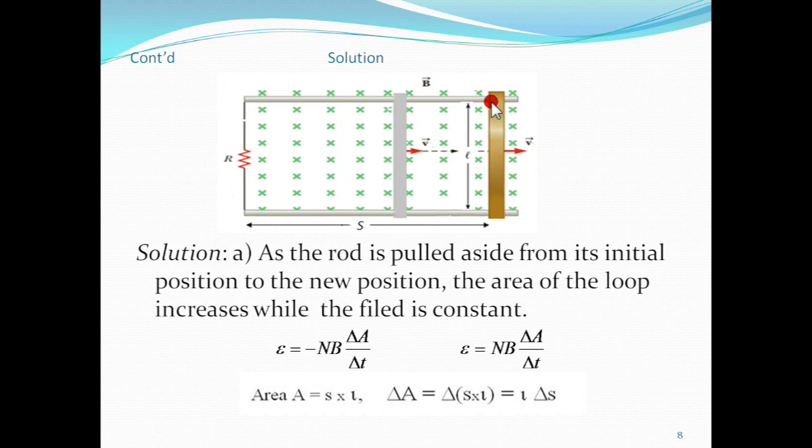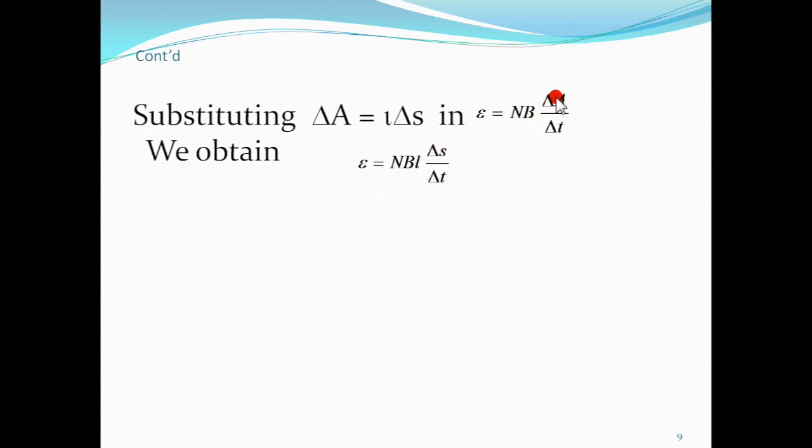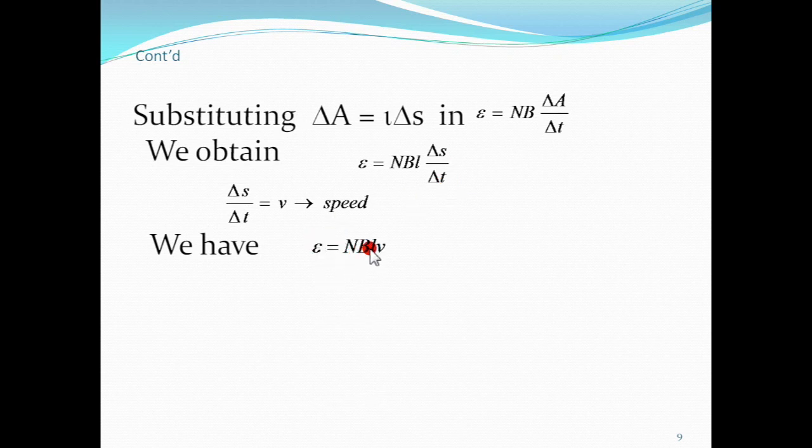We use N B delta A over delta t. What is changing here is the area, which is equal to s times L. E is equal to N B L delta s over delta t. L times delta s - distance over time is speed. So E is equal to N B L V.